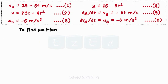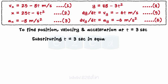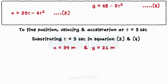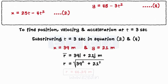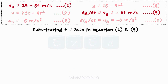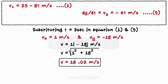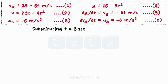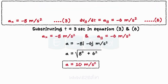To find position, velocity and acceleration at t equals 3 seconds: substituting t equals 3 seconds in equations 2 and 4, we get position in x and y-direction. Therefore, the position vector is r-bar equals 39i plus 21j, and the magnitude of position is 44.29 meters. Similarly, substituting t equals 3 seconds in equations 1 and 5, we get velocity of the particle as 18.02 meters per second. Substituting t equals 3 seconds in equations 3 and 6, we get acceleration of the particle as 10 meters per second square.